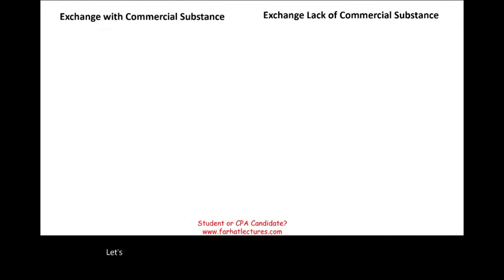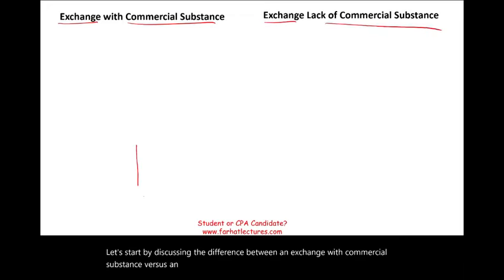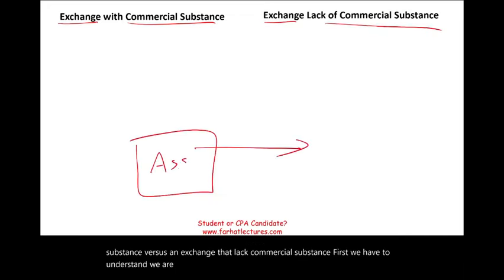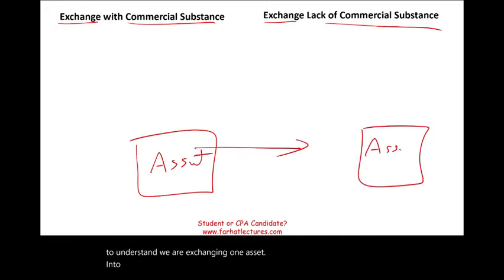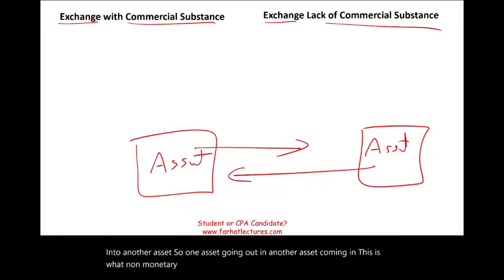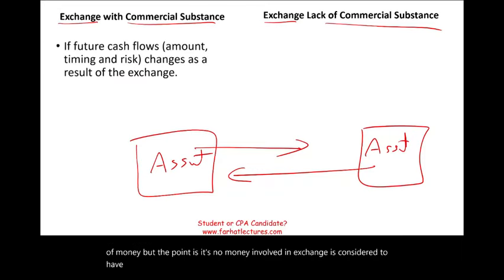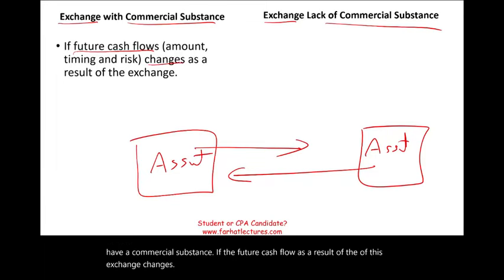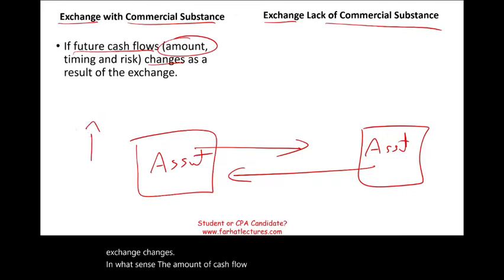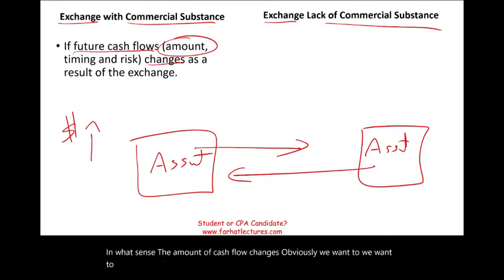Let's start by discussing the difference between an exchange with commercial substance versus an exchange that lacks commercial substance. First, we have to understand we are exchanging one asset for another — one asset going out and another coming in. This is what non-monetary exchange means; no money involved, or could be a little bit of money. An exchange is considered to have commercial substance if the future cash flow as a result of this exchange changes — the amount of cash flow changes.